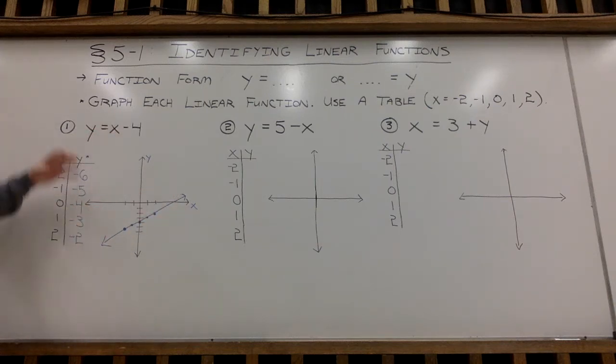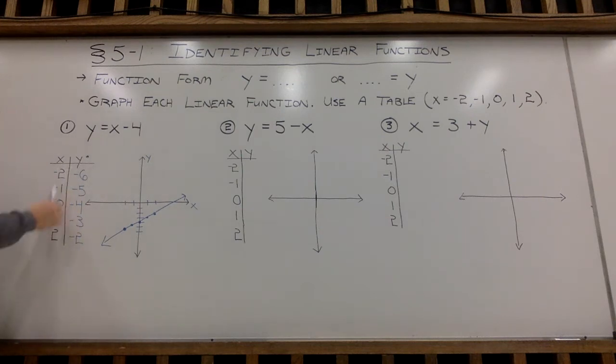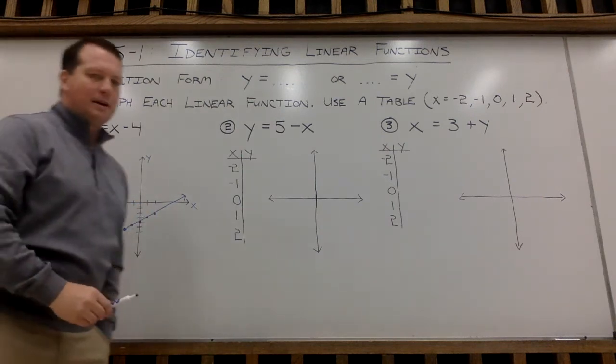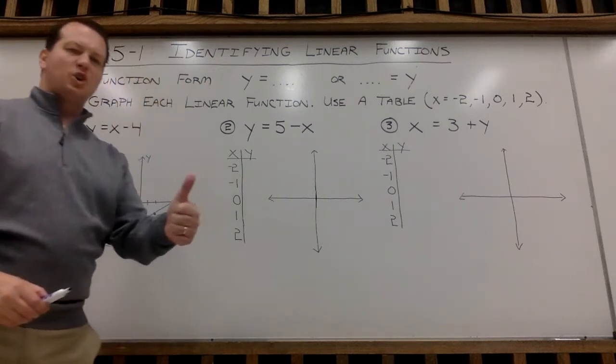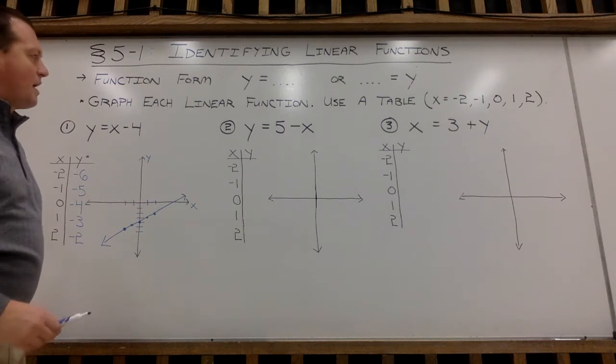So I now have this graph here is the line y equals x minus 4. This is the visual interpretation of my chart here. Now we could do a whole bunch of more points because lines go on forever and ever, but we're going to stick with 5 points. So as long as your 5 points do form a straight line, you know you have a good probability of having the correct graph.